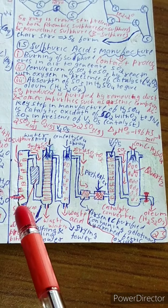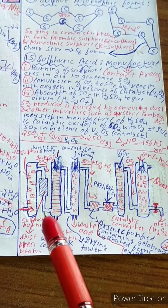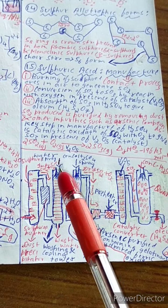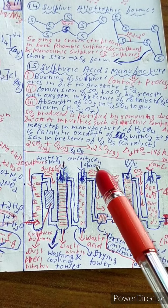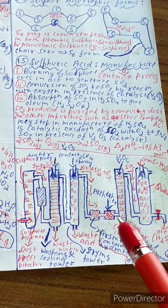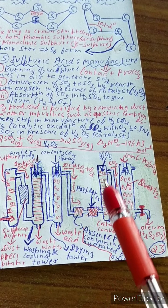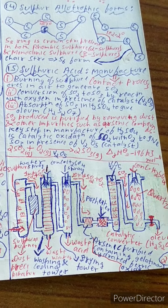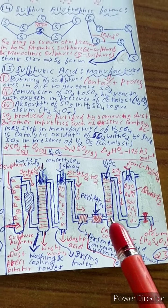In the contact process diagram: sulfur is burned in a sulfur burner producing impure SO₂ plus O₂, which passes through a dust precipitator, then a washing and cooling tower. Next, concentrated H₂SO₄ is sprayed in the drying tower. Dry SO₂ and O₂ pass through an arsenic purifier containing gelatinous hydrated ferric oxide, then a preheater, then into the catalytic converter containing vanadium pentoxide. The resulting SO₃ is passed into concentrated H₂SO₄ to form oleum H₂S₂O₇.